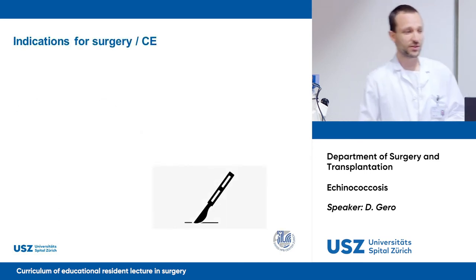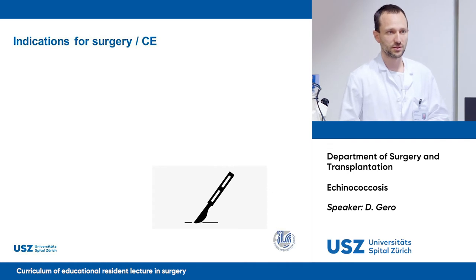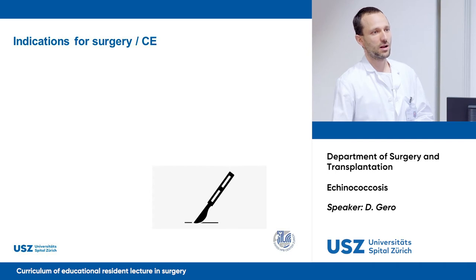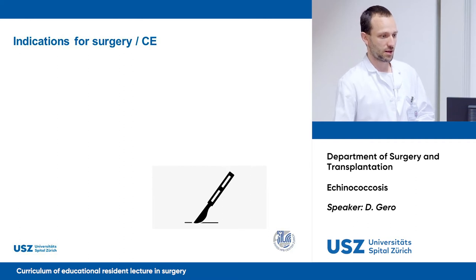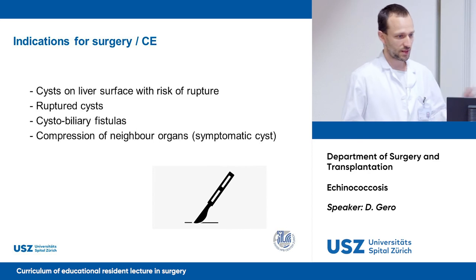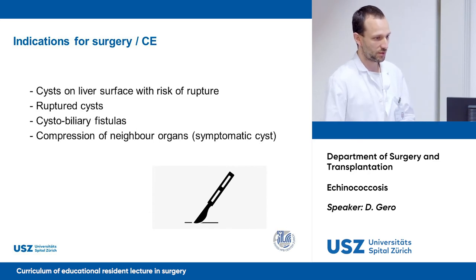Now I'd like to focus on surgical techniques. Frequent indications for surgery in cystic echinococcosis include cysts on the liver surface with risk of rupture, a ruptured cyst, cystobiliary fistulas, or compression of neighboring organs. That is correct — these are the frequent indications.